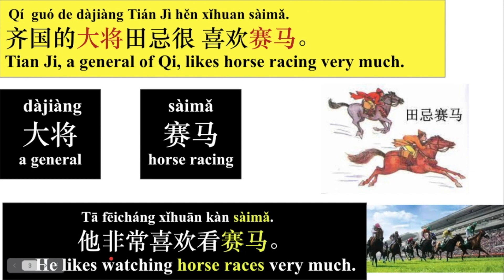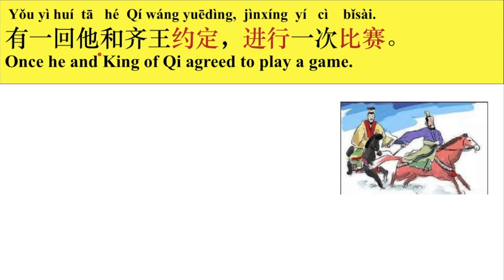例子：他非常喜欢看赛马。好，那齐国的大将田记很喜欢赛马。有一回，他和齐王约定，进行一次比赛。